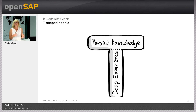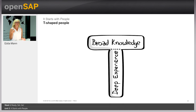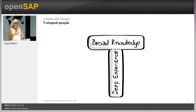For example, I am experienced in computer science and also in business management. Then you have the horizontal part of the T, which represents the expertise to collaborate across disciplines and with other experts in a team. For myself, I'm a design thinking coach and expert, and I also know a lot about agile methodologies — these are things on the broad knowledge bar.